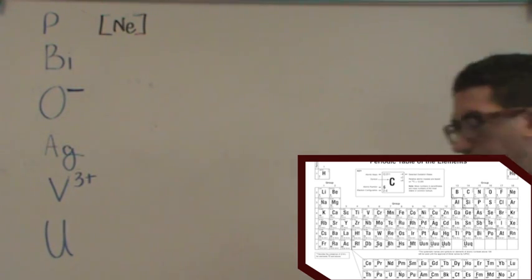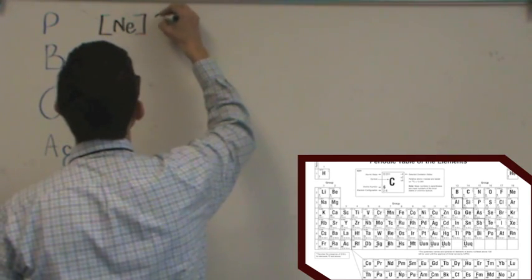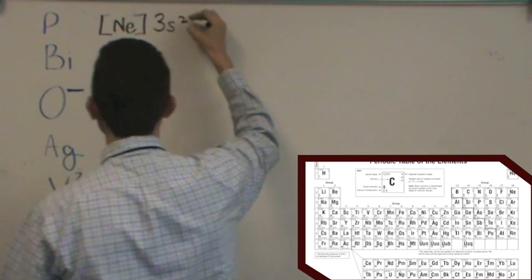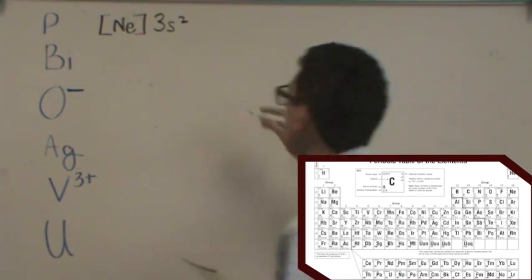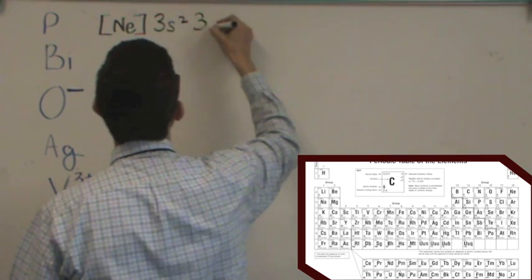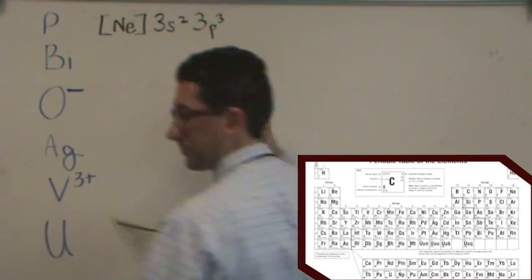So that would be 3S2. And then you kind of scoot over to the side. Aluminum, silicon, phosphorus. There's three of them. So it would be a 3P3. Okay? All right, now let's do one that's a lot further down.